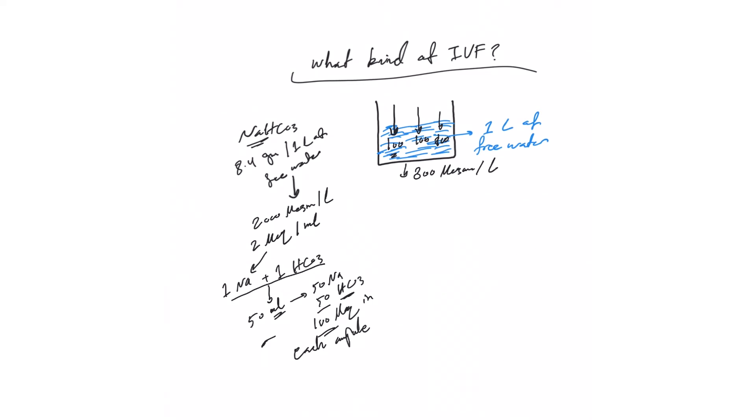This is very close to the body osmolarity, so this will be isotonic. To create an isotonic solution from sodium bicarb, you need to mix three ampoules at this concentration. In our hospital, each ampoule has 100 milli equivalent: 50 of sodium and 50 of bicarb. You need to mix three amps to create isotonic solution. To create hypertonic solution, just add more bicarb.